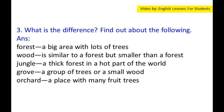Question 3: What is the difference? Find out about the following. Forest: a big area with lots of trees. Wood: similar to a forest but smaller. Jungle: a thick forest in a hot part of the world. Grove: a group of trees or a small wood. Orchard: a place with many fruit trees.